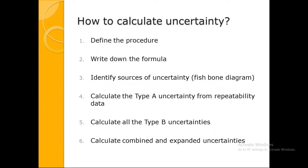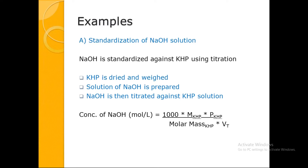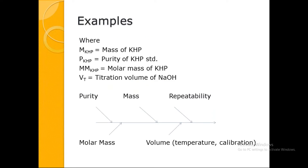The procedure: first write down the procedure, then write down the formula, then identify the sources using a fishbone diagram, and then calculate Type A, Type B, combined, and expanded uncertainty. The first example is standardization of NaOH solution — NaOH standardized against KHP (potassium hydrogen phthalate) using titrimetry. The formula considers the molar mass of KHP, purity of KHP, mass of KHP, and volume of titration. The fishbone diagram identifies sources: repeatability, mass, purity, molar mass, and volume.